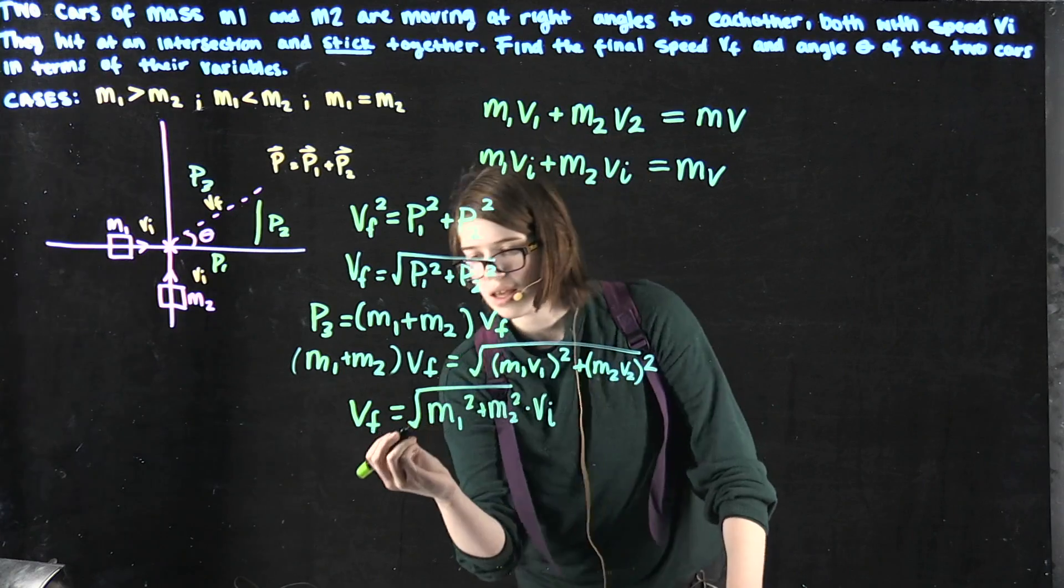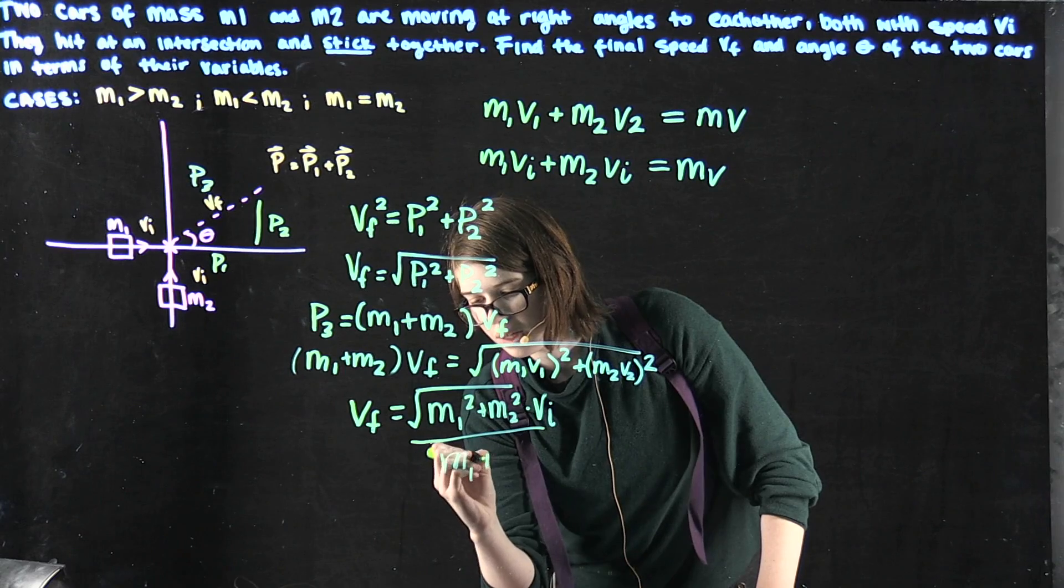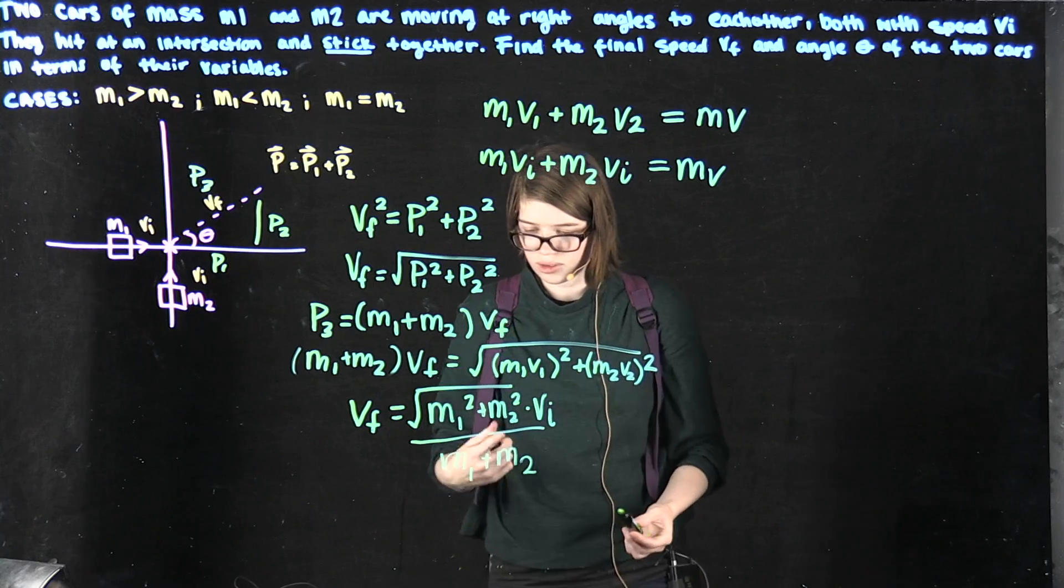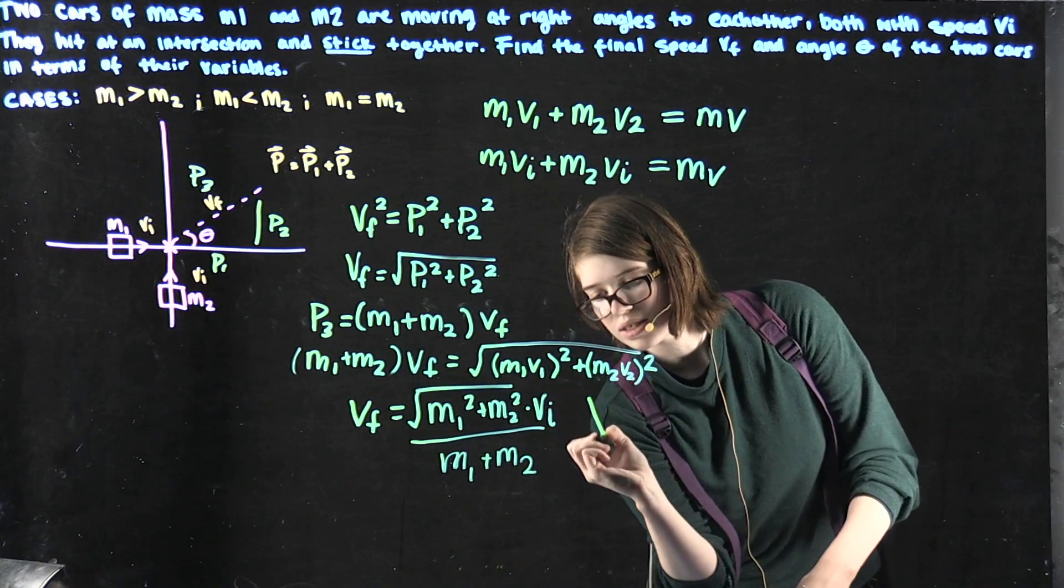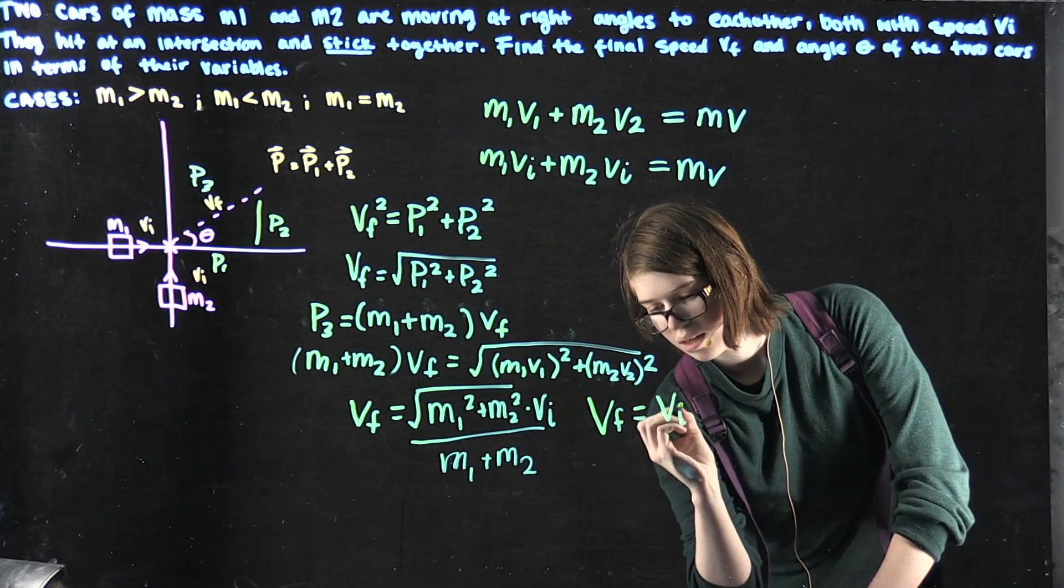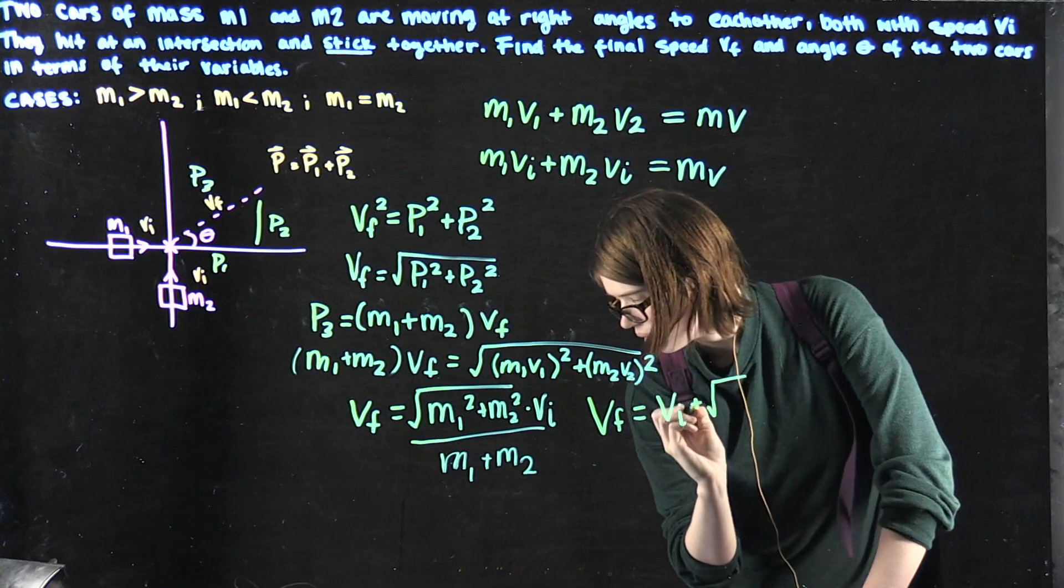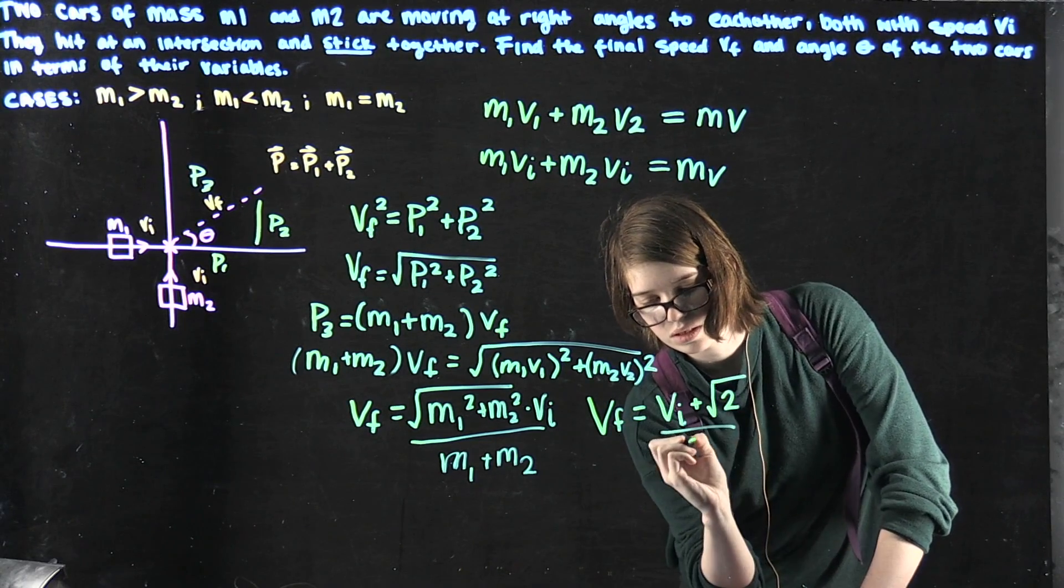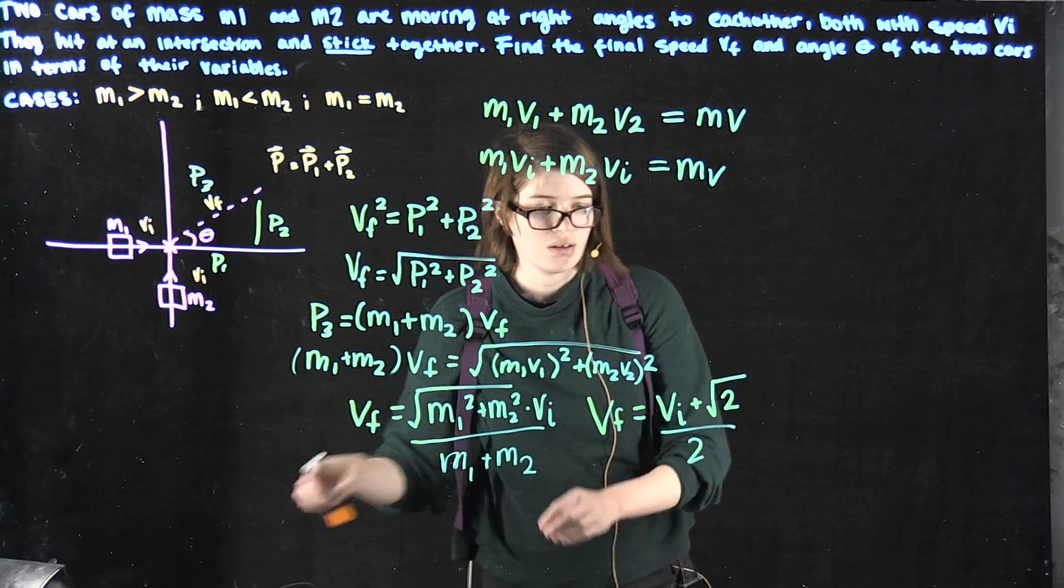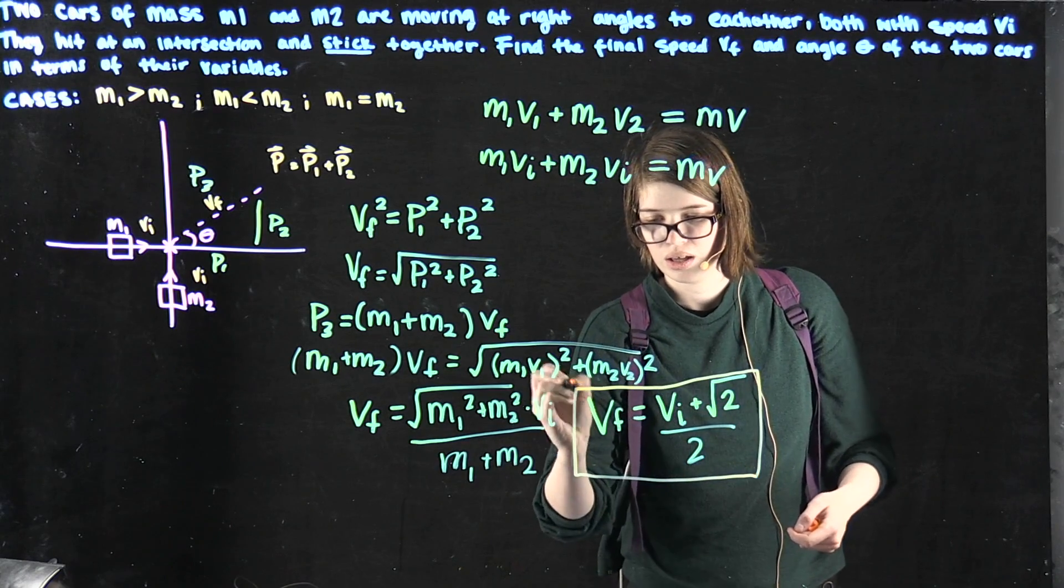With our division, that's all over m1 plus m2. This can be simplified further, and overall we get velocity final equals vi times square root of 2 all over 2. That is our final value for the velocity final in terms of our variables.